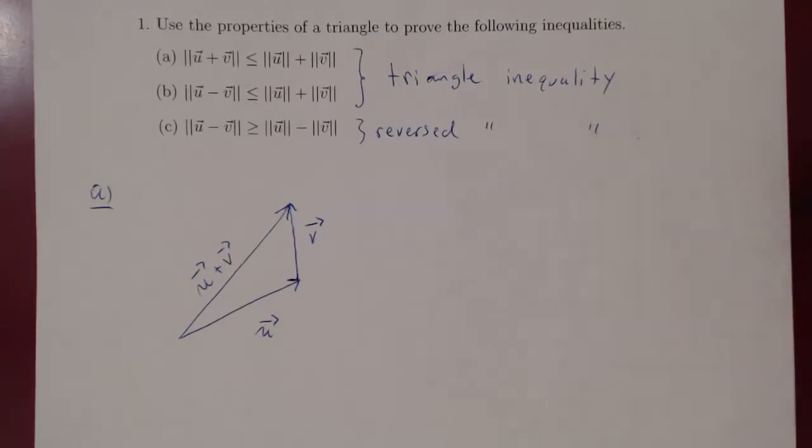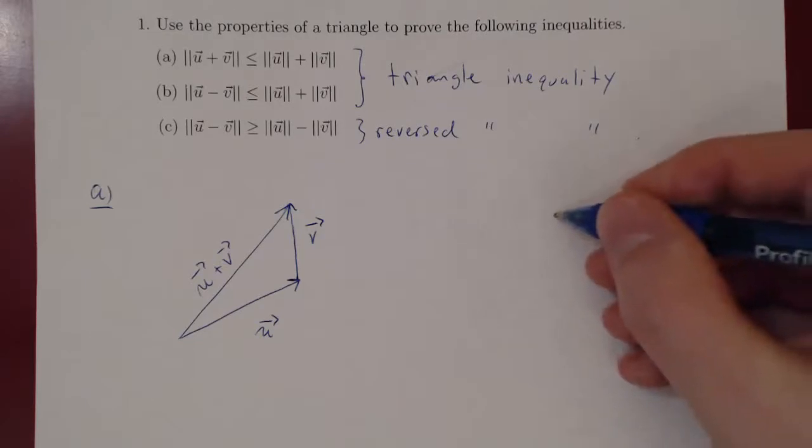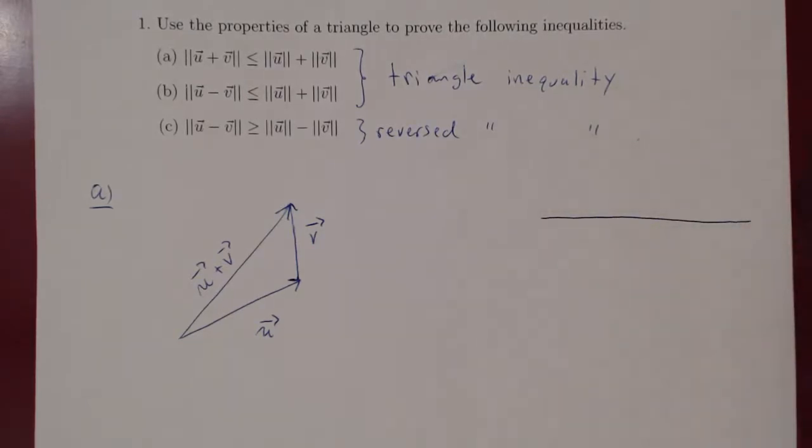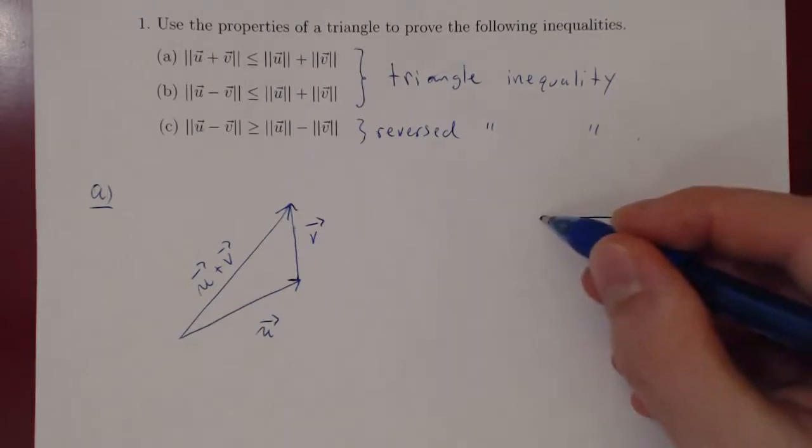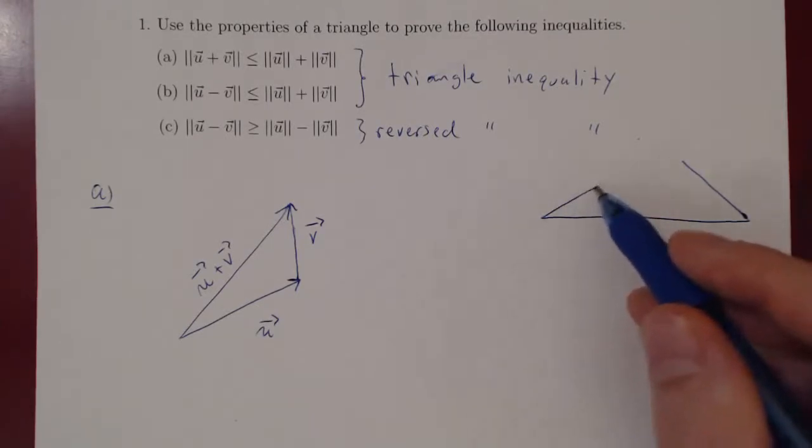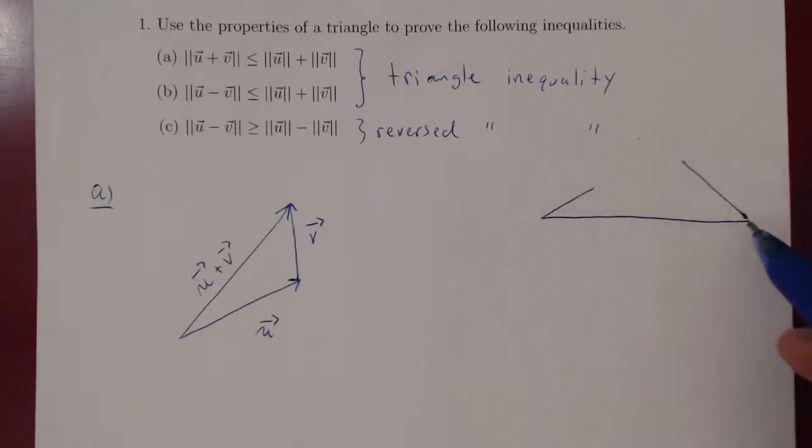And imagine it this way. Suppose you are trying to build a triangle, and suppose that one of the edges, say this one, is longer than the sum of the other two edges. So imagine one edge being this one, and the other edge being this one. If the third edge is longer than the sum of the other two edges, you cannot construct a triangle.